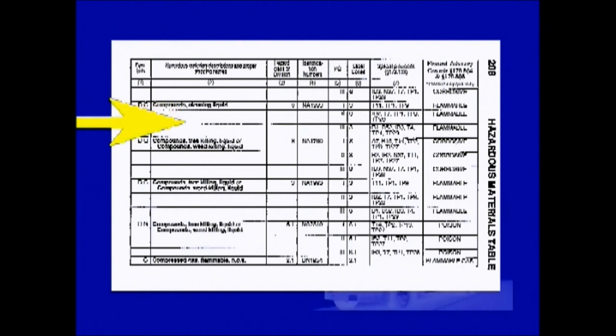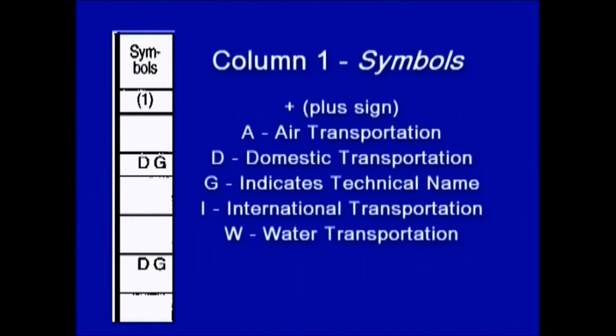Let's start with column one. Column one has six symbols: a plus sign and capital letters A, D, G, I, and W. The plus sign indicates that the proper shipping name, hazard class, and packing group must be used regardless of any mixtures or solutions of that material. An A stands for air transportation. A D indicates commodities for domestic transportation. A G indicates that the technical name or names must be entered in parentheses in association with the basic description. An I indicates international transportation. And a W signifies water transportation.